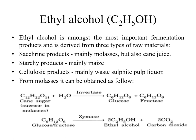Next is ethyl alcohol, also known as ethanol. Ethyl alcohol is among the most important fermentation products and is derived from three types of raw materials: saccharine products — mainly molasses but also cane juice; starchy products — mainly maize; and cellulosic products — mainly waste sulfite pulp liquor. From molasses, ethanol is obtained as follows.